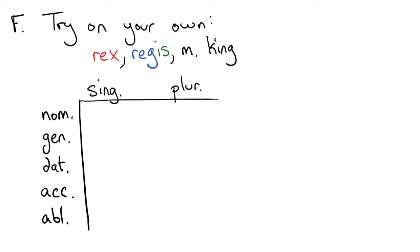If you did it right, you should have gotten rex straight out of the vocab entry, and then regis for the genitive singular, again, straight out of the vocab entry. Your stem would be reg, after dropping the I-S.